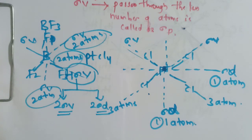This completes the explanation of the plane of symmetry and its three types: the vertical plane of symmetry (sigma_v), the horizontal plane of symmetry (sigma_h), and the dihedral plane of symmetry (sigma_d). If you liked this video, please subscribe to the channel. Thank you for watching.